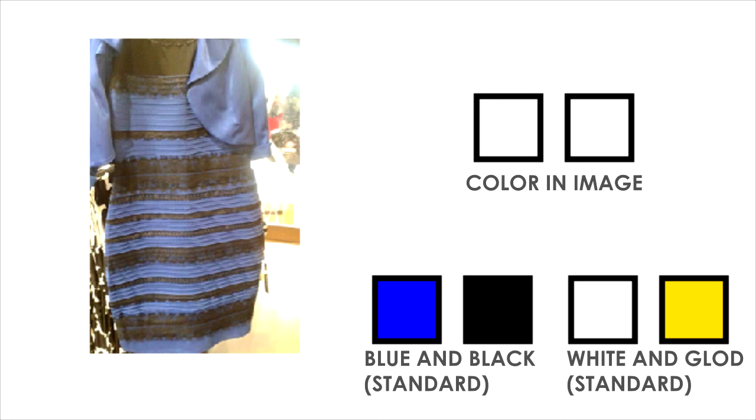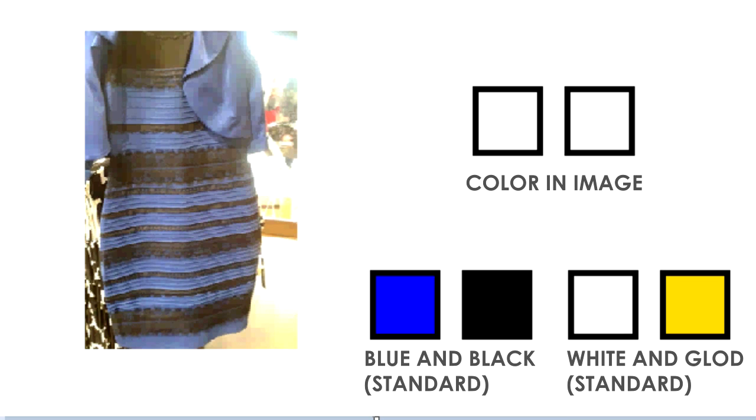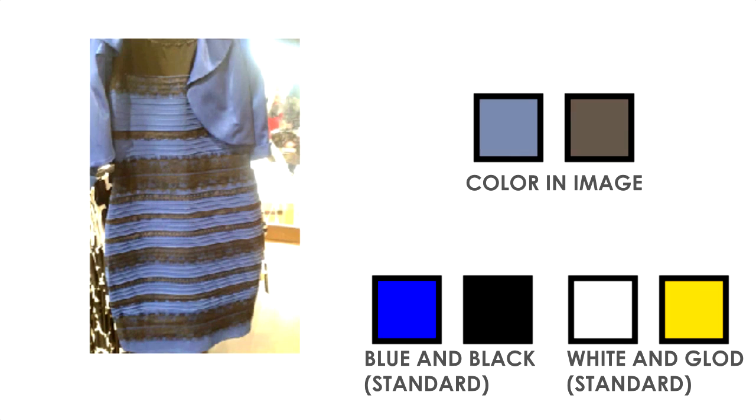But wait, what's the color of the dress as seen in the image? By taking a color picker, let's choose the pixel values of the strip and put them in these boxes. As you can see, the pixel values of these boxes are closer to blue and black than white and gold.